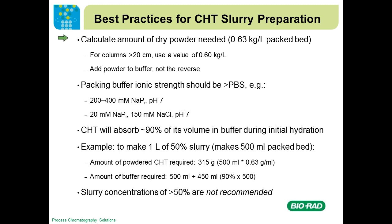Calculate the amount of dry powder you need. The true tap settle density is 0.63, but we recommend using 0.60 kilograms per liter. You want to add the CHT powder to buffer, not the reverse — because adding buffer to powder makes it very hard to resuspend CHT in a reasonable amount of time. We recommend the packing buffer have an ionic strength of at least that of PBS, around 15 millisiemens per centimeter. Many people use 200 to 400 millimolar phosphate at neutral pH. People have also packed in 1 N sodium hydroxide — that's fine too.